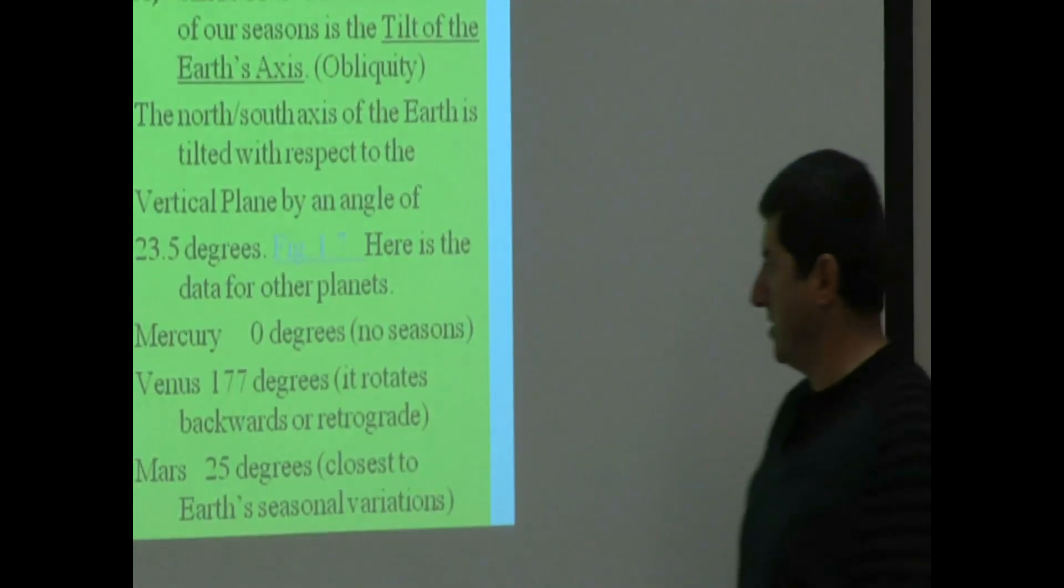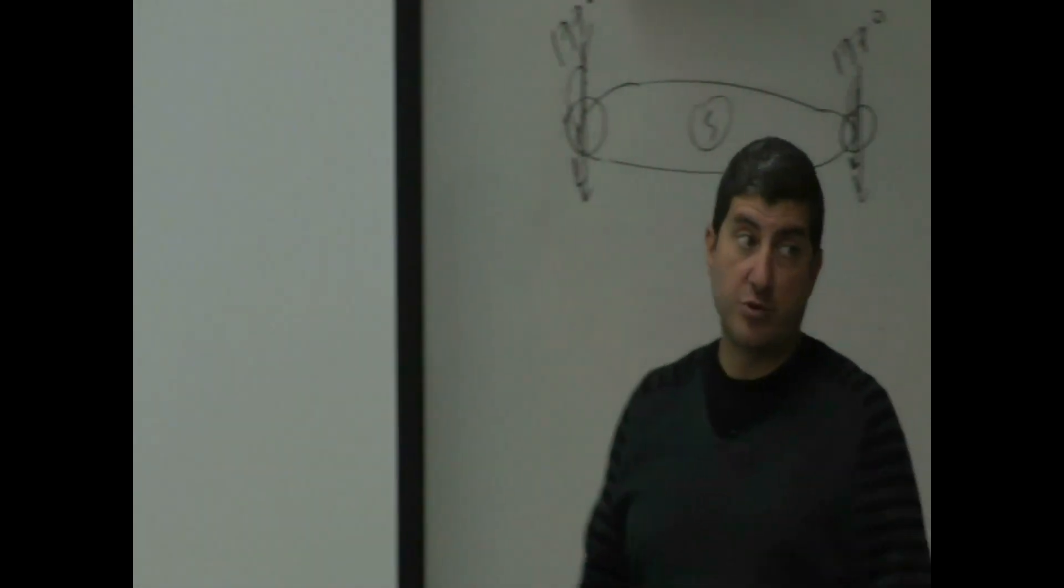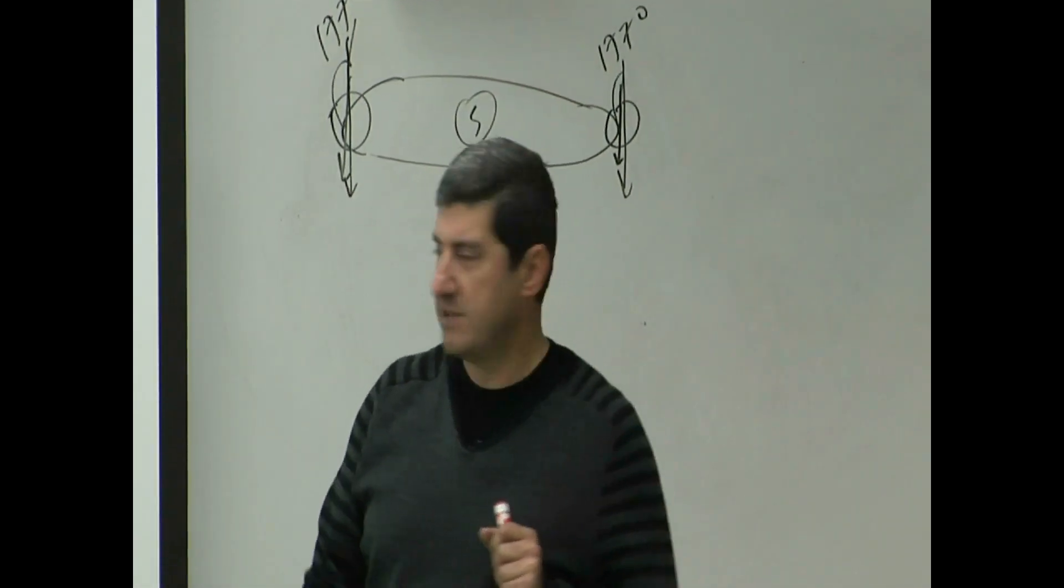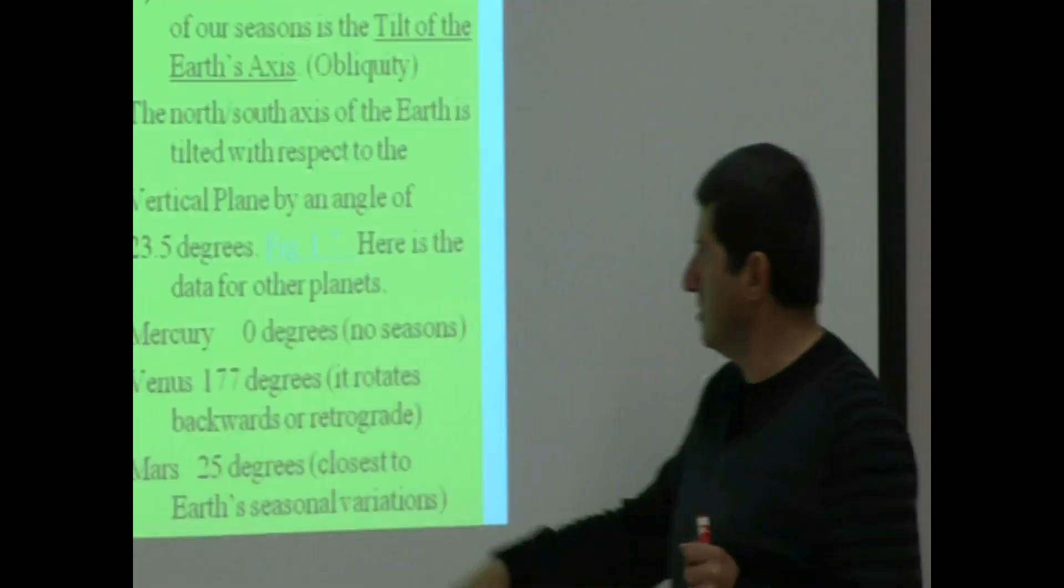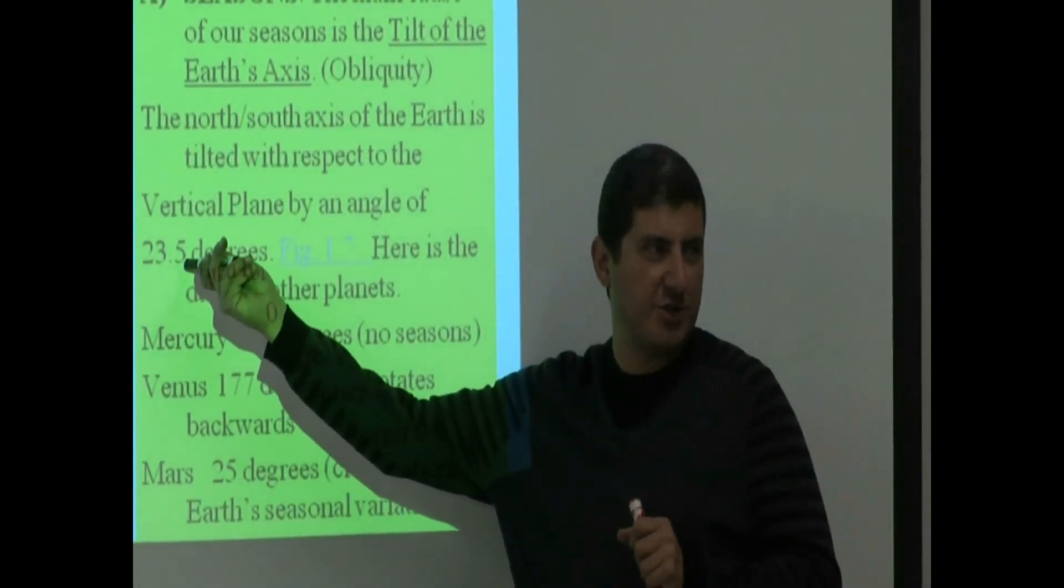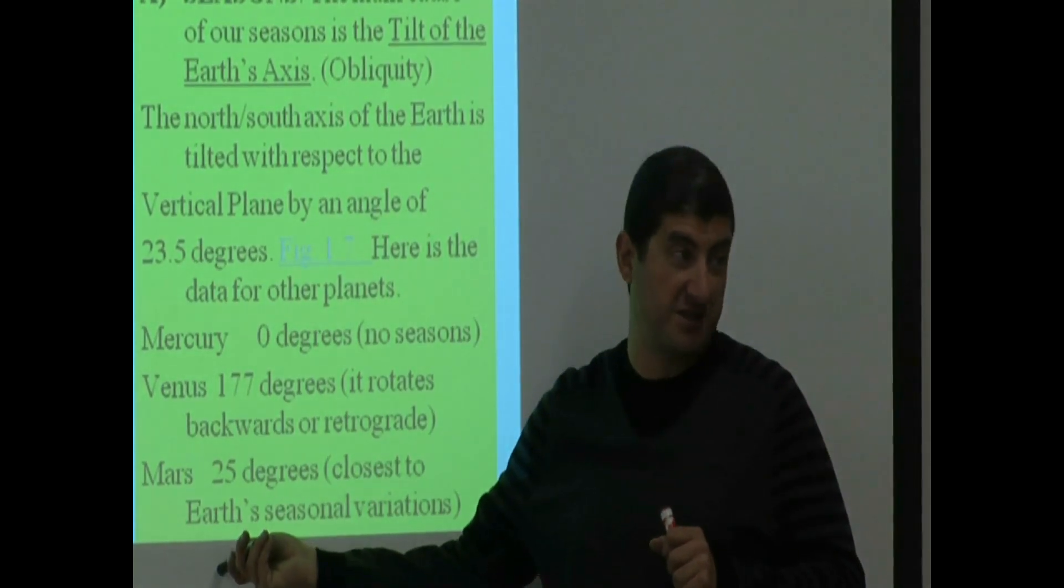Mars' tilt is 25 degrees. Notice this makes it a good candidate for us to go live there because its seasonal variation will be similar to Earth's seasonal variation. You will have good four seasons.